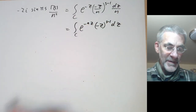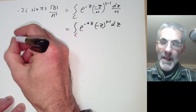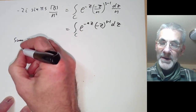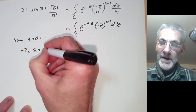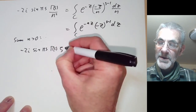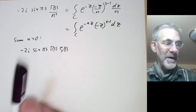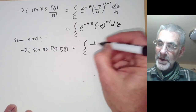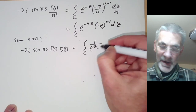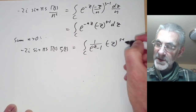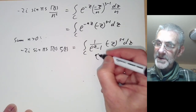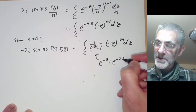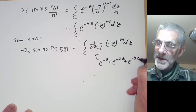We integrate over contour C and then sum over n greater than zero. The left side becomes minus 2i sine(πs) times gamma(s) times zeta(s), since we are summing over n to the s. The right side becomes the integral over C of (1 over (e to the z minus 1)) times (minus z to the s minus 1) dz, because 1/(e^z − 1) equals e to the minus z plus e to the minus 2z plus e to the minus 3z and so on.